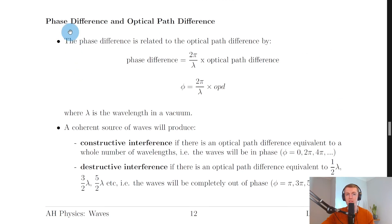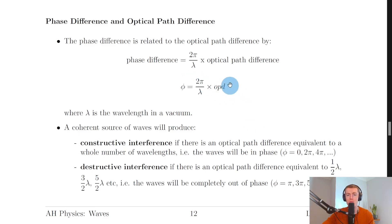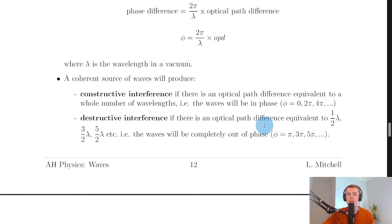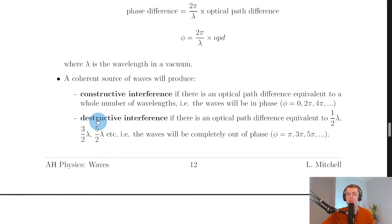Finally, phase difference and optical path difference are related by: phase difference = (2π / lambda) × OPD, where lambda is the wavelength in a vacuum. This is analogous to the earlier relationship φ = 2πx / lambda, but with OPD replacing x. Constructive interference occurs when OPD equals a whole number of wavelengths — phase difference of 0, 2π, 4π radians. Destructive interference occurs when OPD equals half a wavelength, 3/2 wavelengths, 5/2 wavelengths, etc. — phase difference of π, 3π, 5π radians.